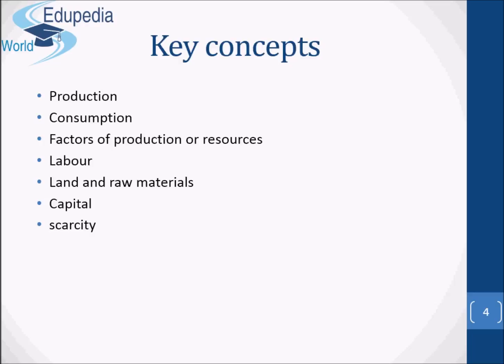Let's get started with production. Production is the transformation of inputs into outputs by firms in order to earn profit or to meet some other objective. Consumption is the fact of using goods and services to satisfy wants. This will normally involve purchasing the goods and services. As for the factors of production or resources, they represent the inputs into the production of goods and services, and they are labour, land and raw materials, and capital.